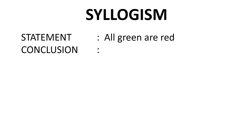For example, the statements could be: All green are red. All cars are blue. All bikes are black. From these statements we derive a conclusion. The answer options are: one follows, either one or two follows, either two or three follows, or none of them follow.